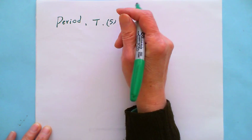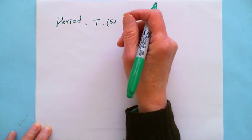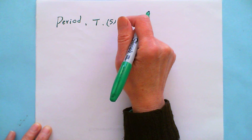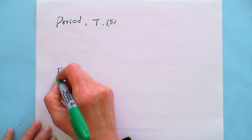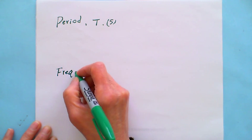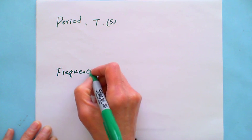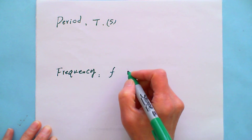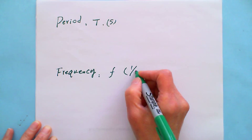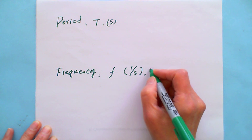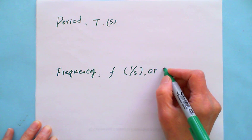How long does it take an object to complete one revolution? That is the period. What is the frequency? Frequency, we use F. The unit is one over second, or we use Hertz.